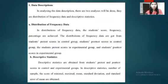In distribution of frequency data, the students' scores, frequency, and percentages are achieved. The distributions of frequency data are obtained from students' pretest scores in control group, students' posttest scores in control group, students' pretest scores in experimental group, and students' posttest scores in experimental group.